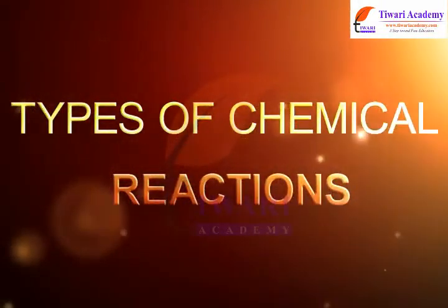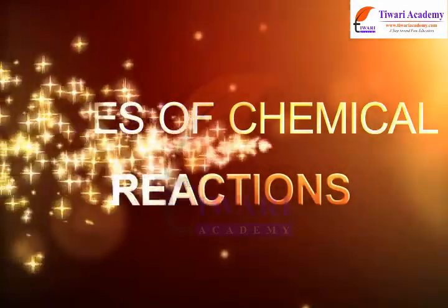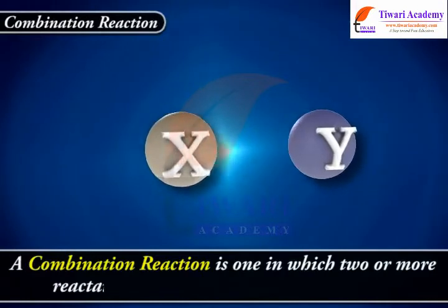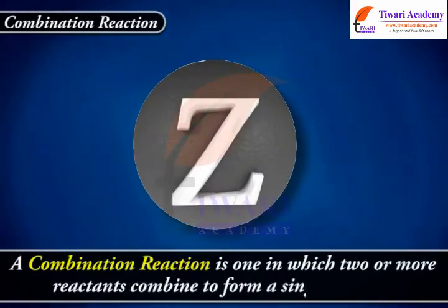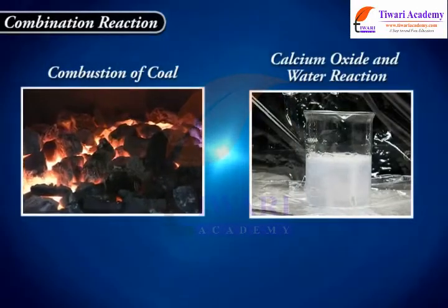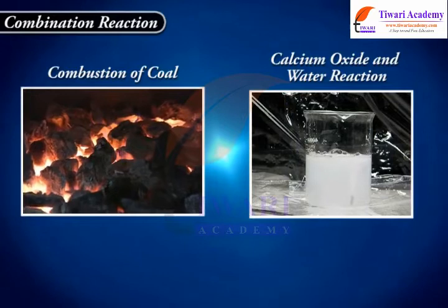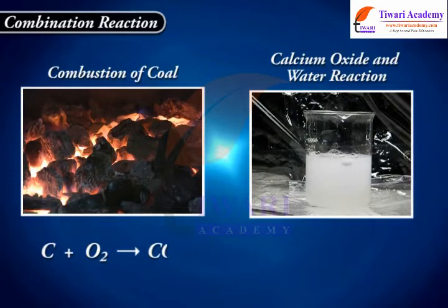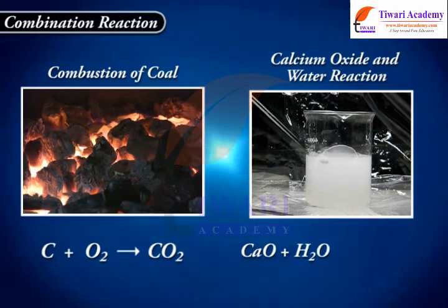Types of chemical reactions. A combination reaction is one in which two or more reactants combine to form a single product. Examples include combustion of coal and reaction of calcium oxide with water: C + O₂ → CO₂, and CaO + H₂O → Ca(OH)₂.